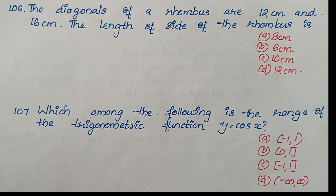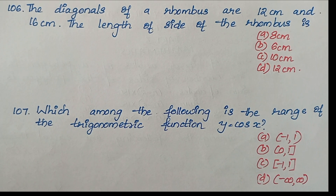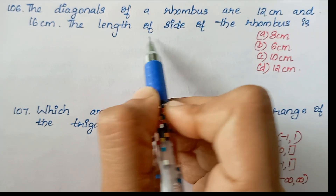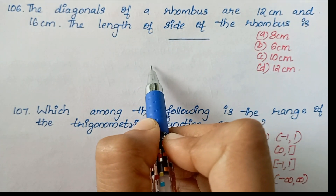Question 106: The diagonals of a rhombus are 12 cm and 16 cm. Find the length of the side of the rhombus. The diagonals of a rhombus bisect each other at right angles.